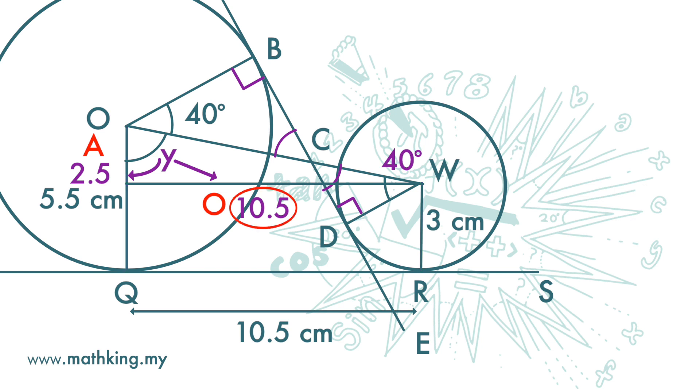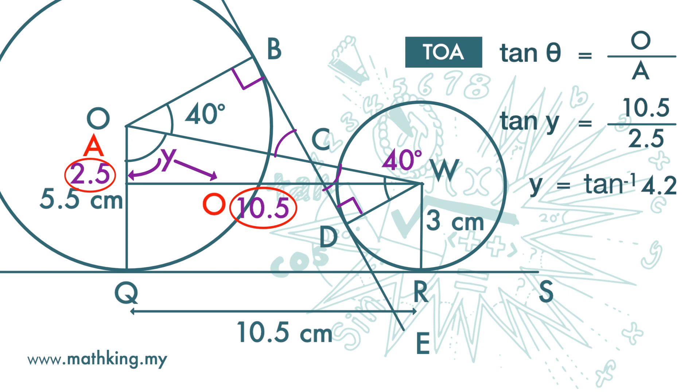We have opposite and adjacent. Opposite over adjacent is tangent. So, tangent Y is 10.5 over 2.5. Or, in decimal, 4.2. So, Y is inverse of tangent 4.2. And we get Y is 76.6 degrees. Rounding off to three significant figures.